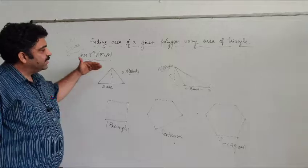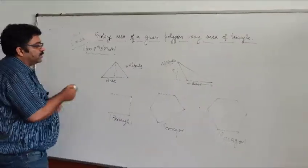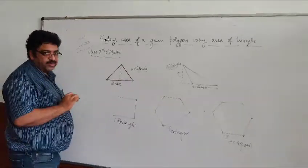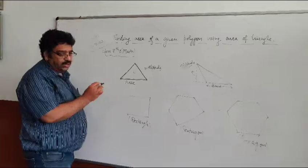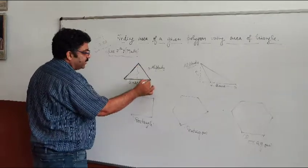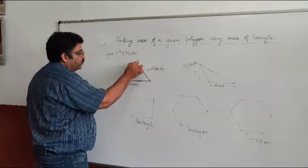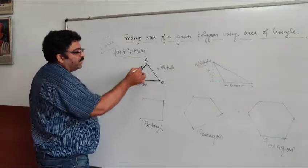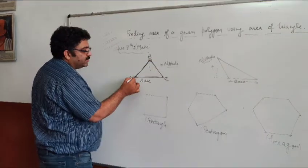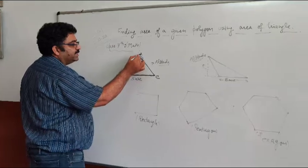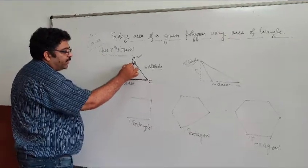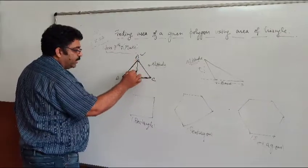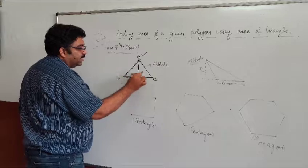I have shown two triangles here. These three sides of the triangle — any one of them can be taken as base. You can take this as base, this as base, or this as base. Let us suppose that you have taken side BC as base, then you draw a perpendicular from the vertex which is opposite to this side. Let us say this is A, so I will draw a perpendicular from A to BC. This will be the base, and this perpendicular drawn to BC is the altitude.